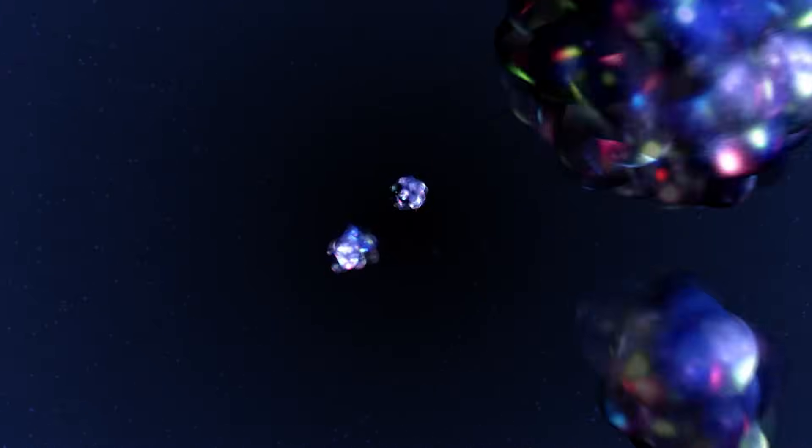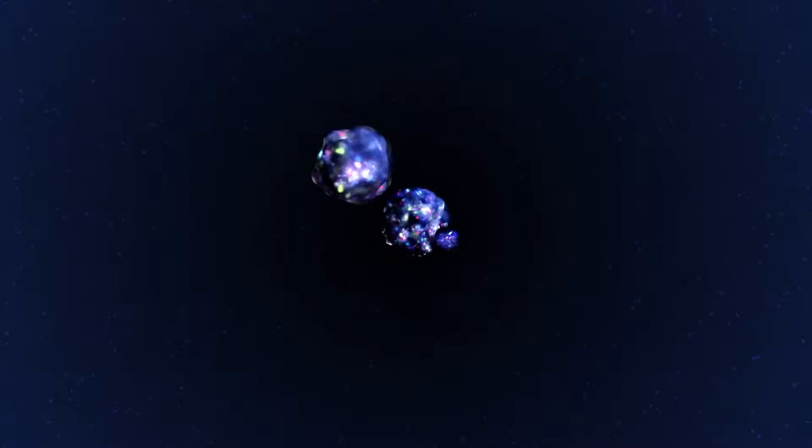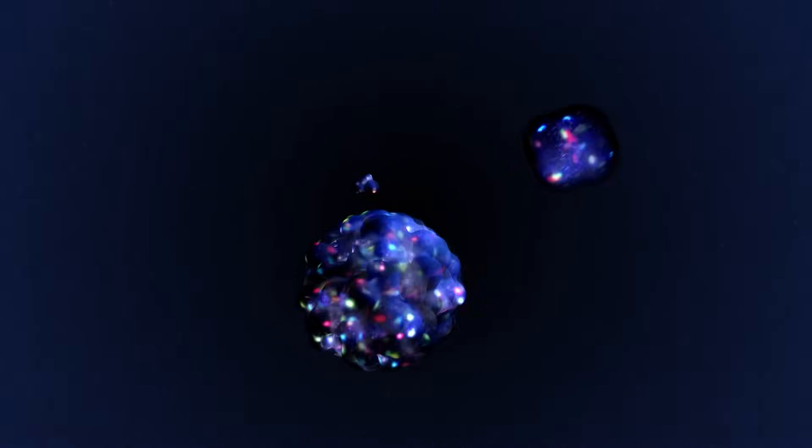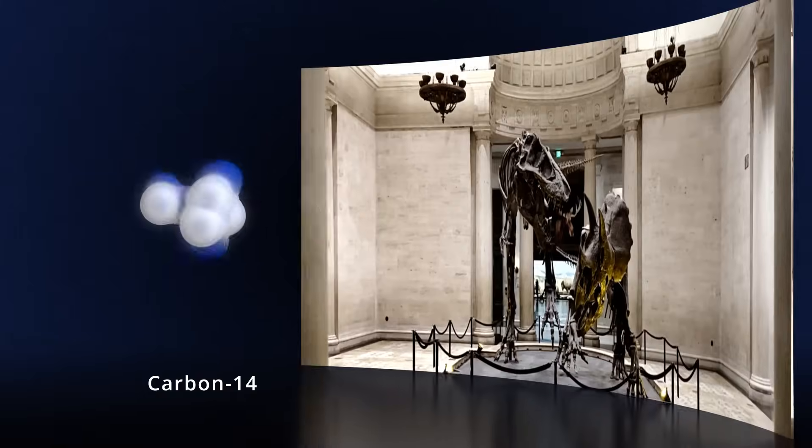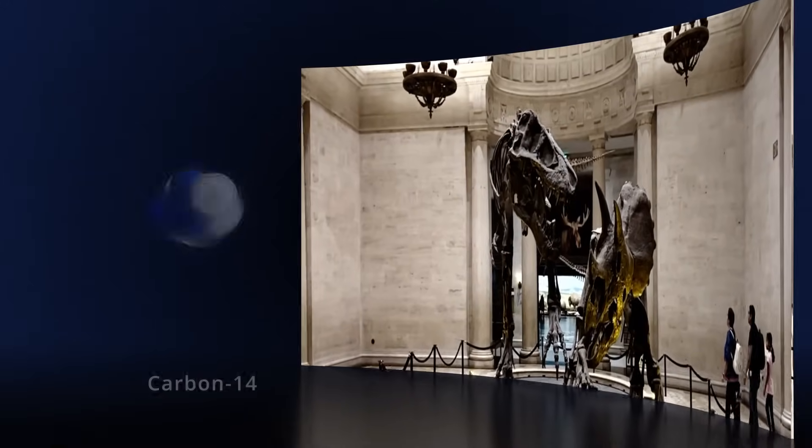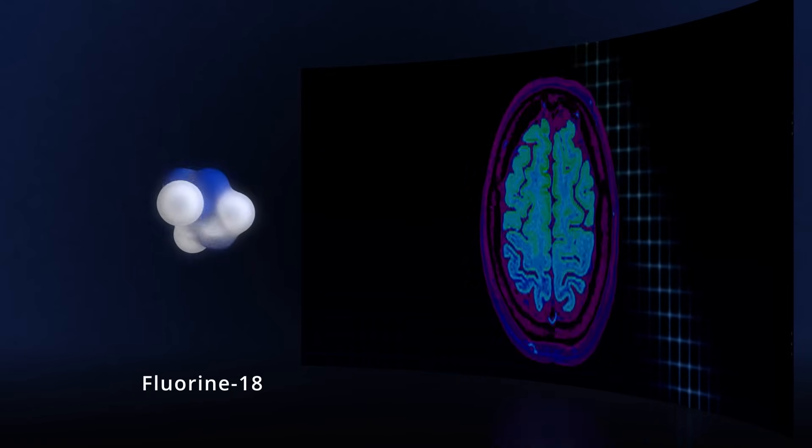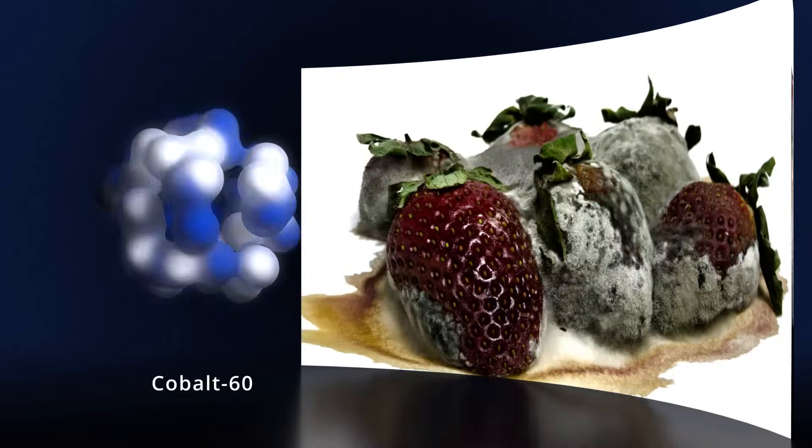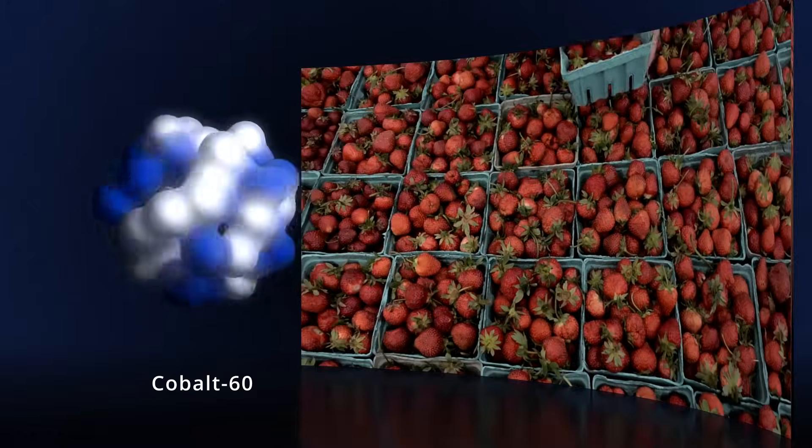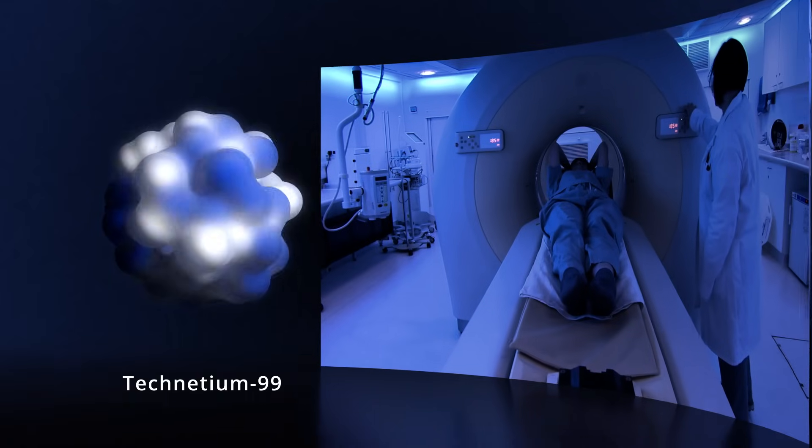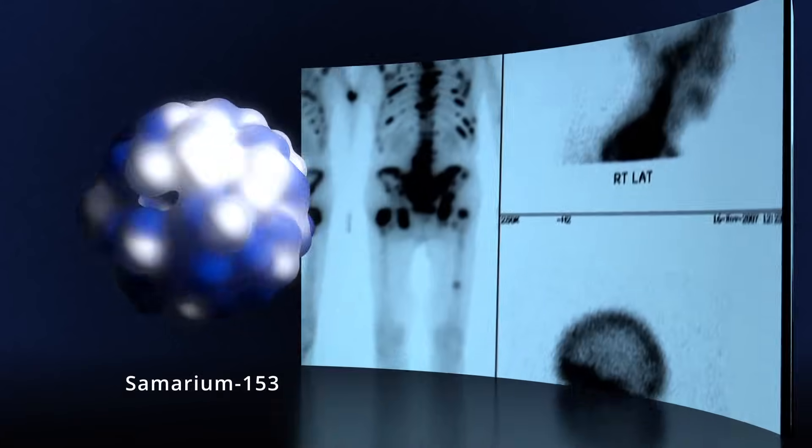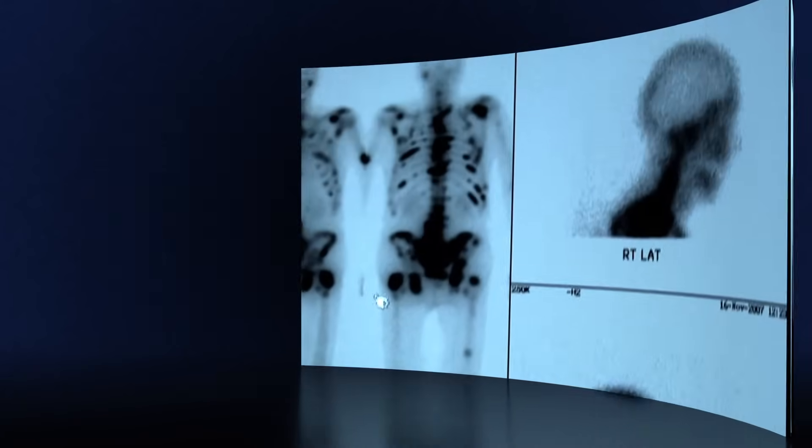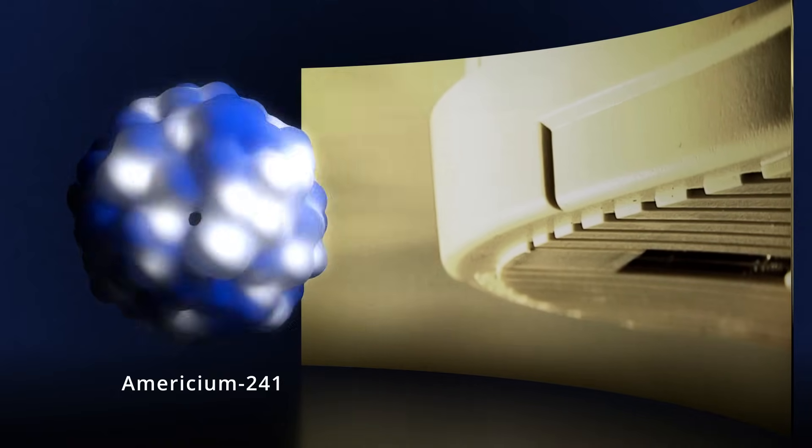Despite the dominance of these elements, a large variety of nuclei are used in technical applications benefiting humankind. For example, tritium or hydrogen-3 is used to power exit signs. Carbon-14 is used to date our Earth, world history, and art. Fluorine-18 is used as a tracer for brain and biological imaging. Cobalt-60 has been used to help reduce disease and extend food shelf life. Technetium-99 is widely used in nuclear medical imaging. Samarium-153 is used to treat bone metastasis. Americium-241 is used in smoke detectors.